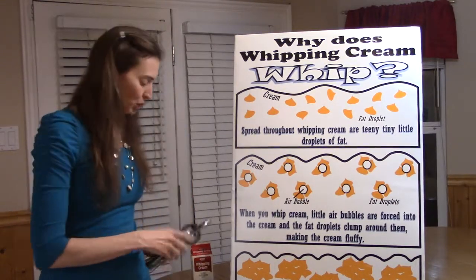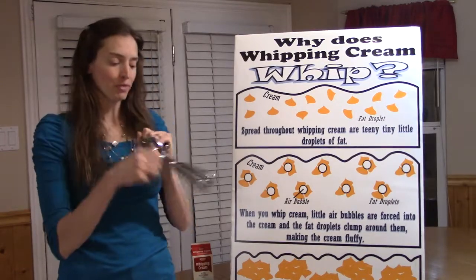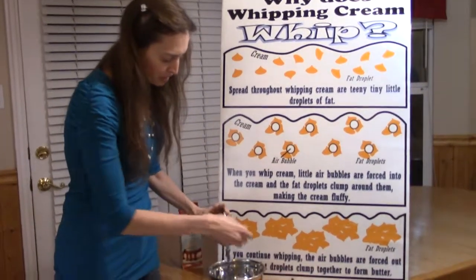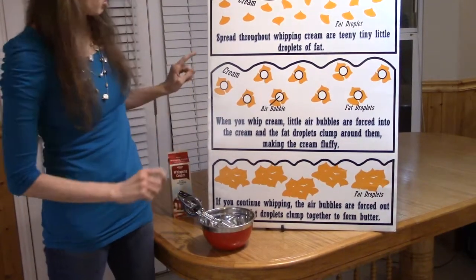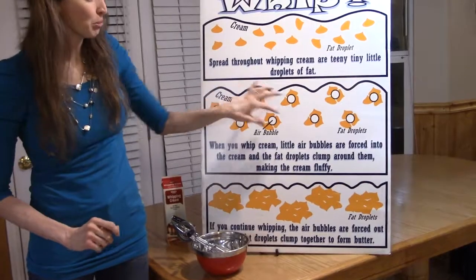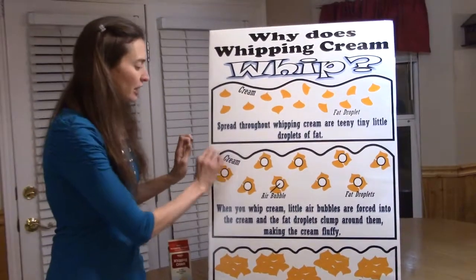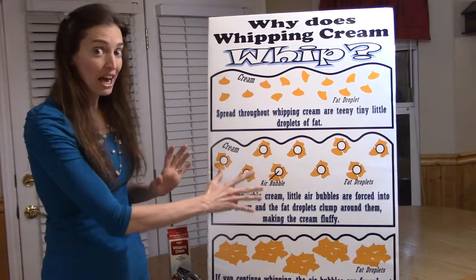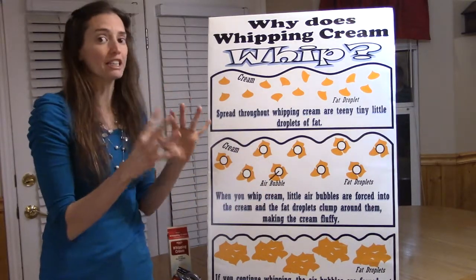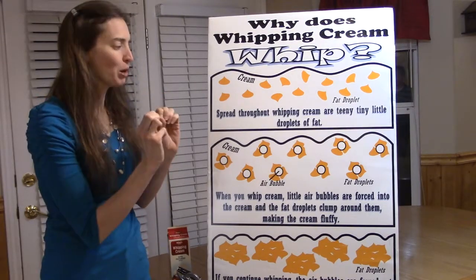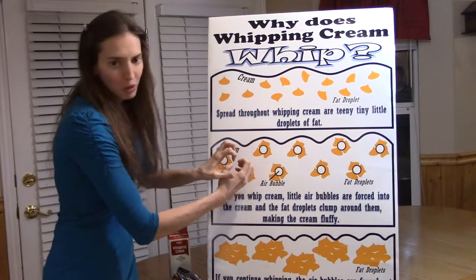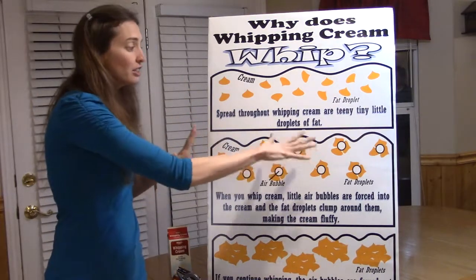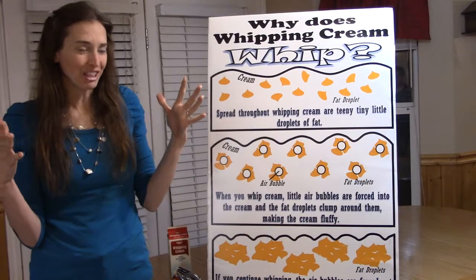But to get it to go all fluffy, what you do is beat some air into it. I'm going to take my little egg beaters and start beating the whipping cream. Over time, as you are whipping, you are forcing little tiny air bubbles into the cream. At first they just kind of go in and pop — the water can't really keep them in place. But the fat, on the other hand, is actually really drawn to those tiny bubbles of air. Those fat droplets will clump around the air bubbles and form little clusters, which puts air into the cream and makes it very fluffy and a whole lot yummier to eat.